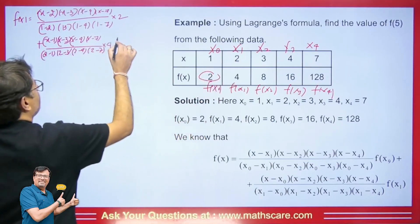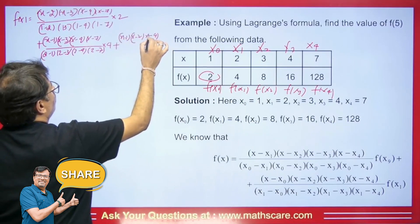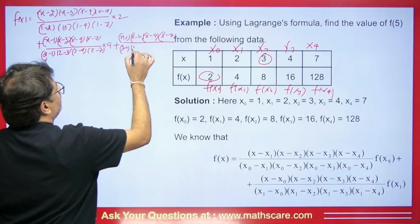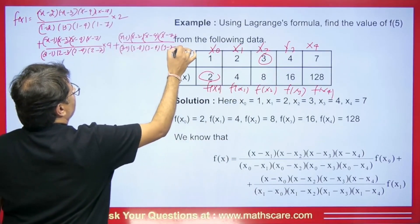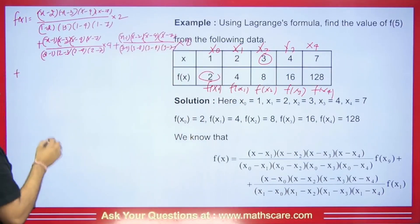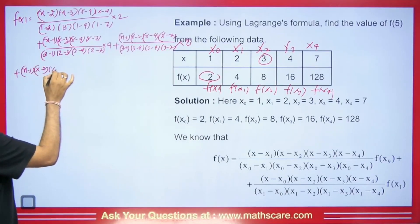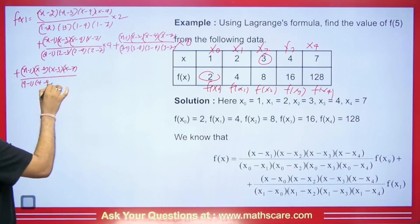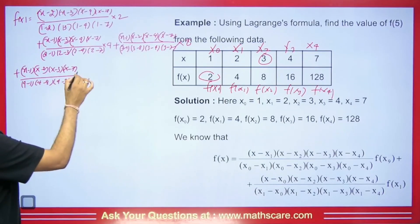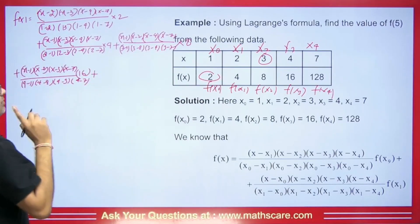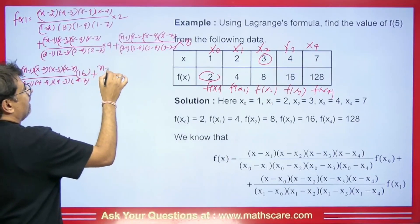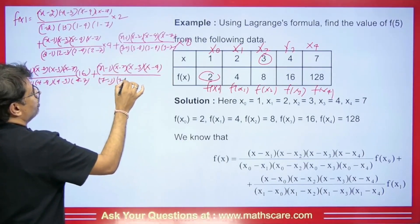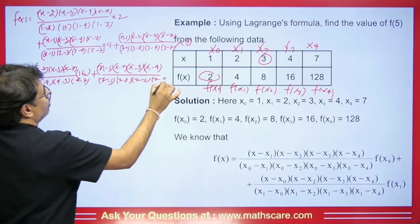Now we hide x2=3, giving (x−1)(x−2)(x−4)(x−7) divided by (3−1)(3−2)(3−4)(3−7) multiplied by 8. Plus, hiding x3=4: (x−1)(x−2)(x−3)(x−7) divided by (4−1)(4−2)(4−3)(4−7) multiplied by 16. Plus, hiding x4=7: (x−1)(x−2)(x−3)(x−4) divided by (7−1)(7−2)(7−3)(7−4) multiplied by 128.